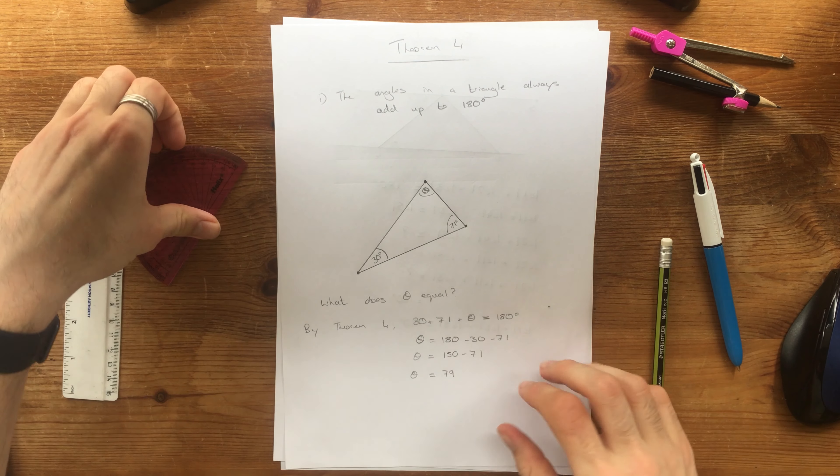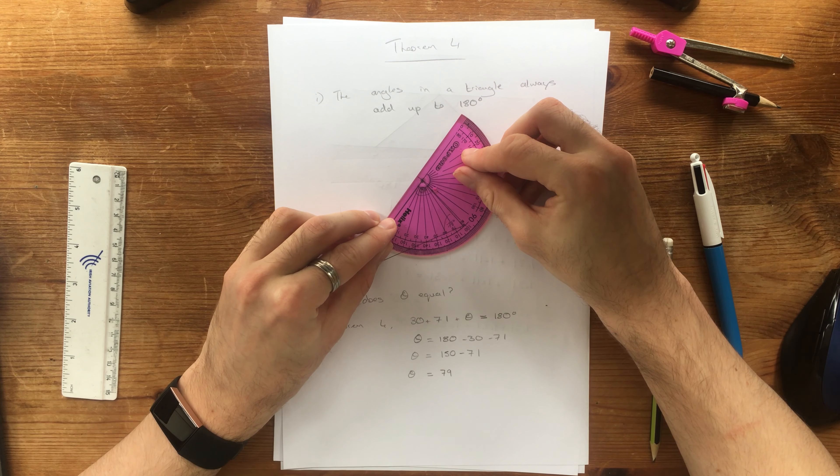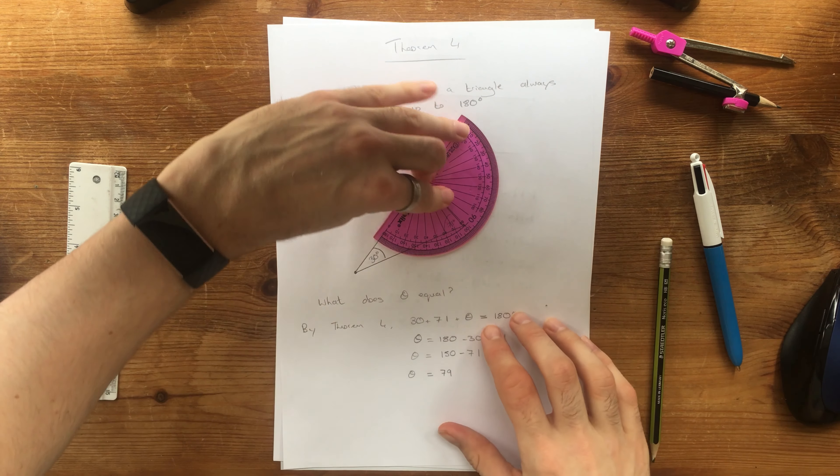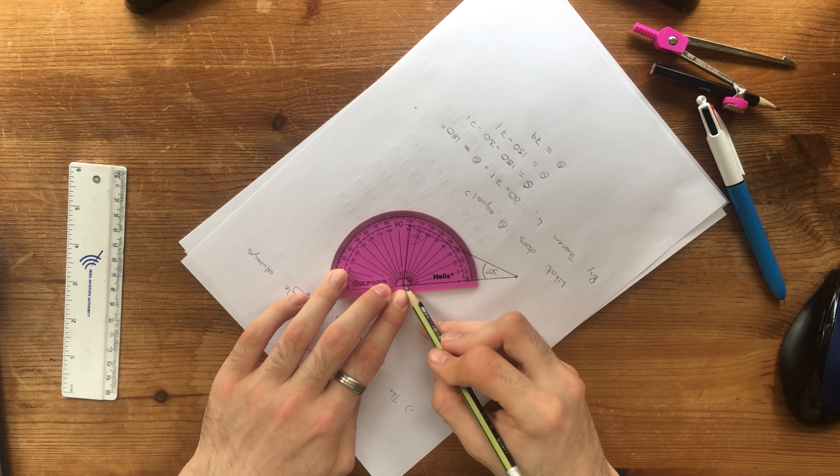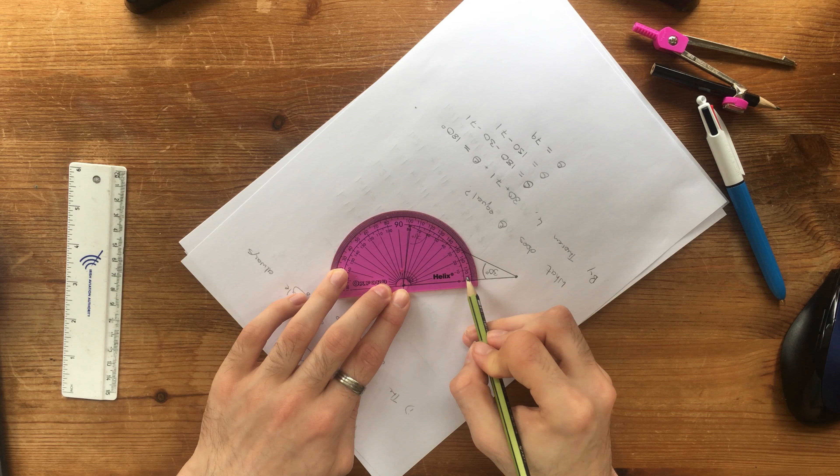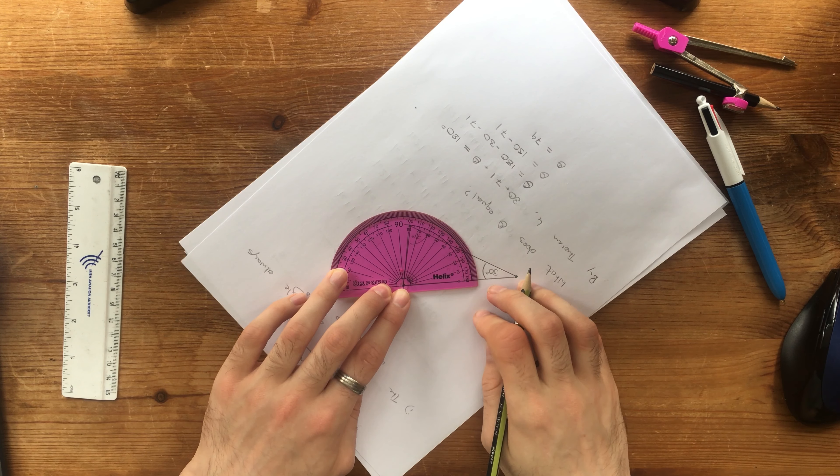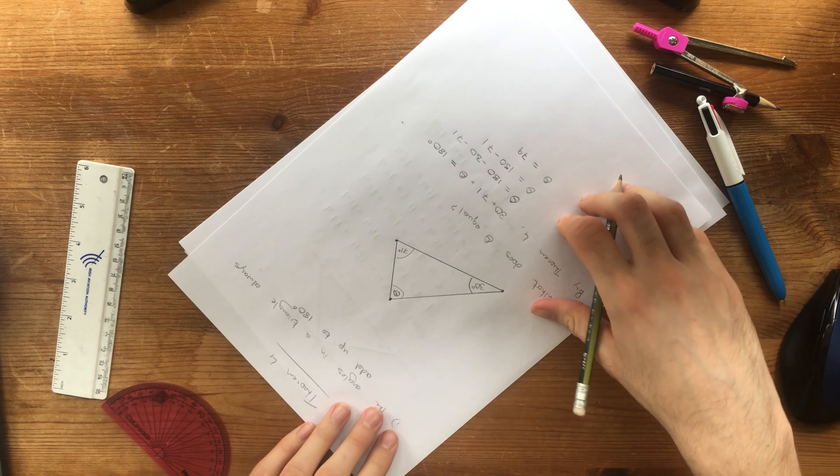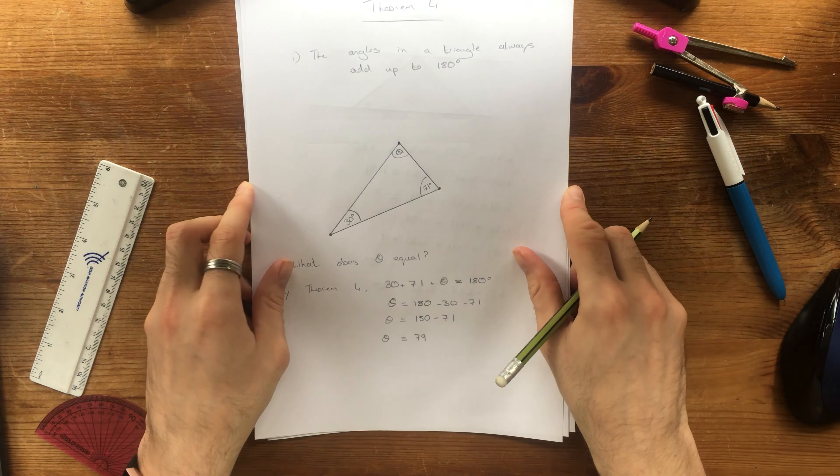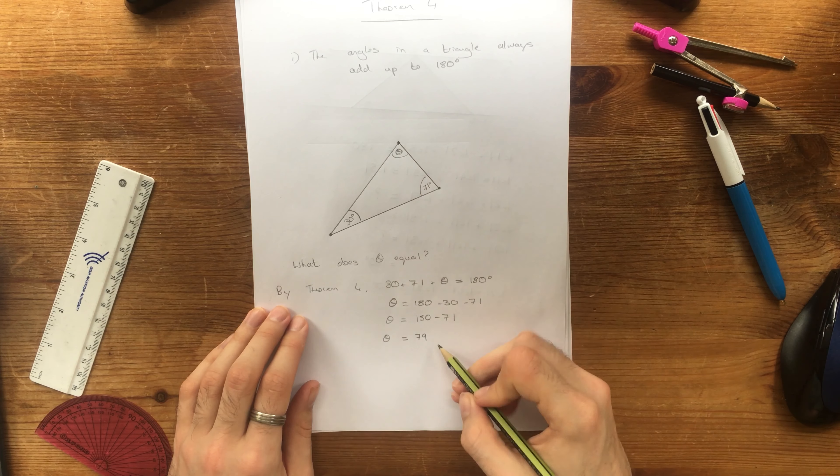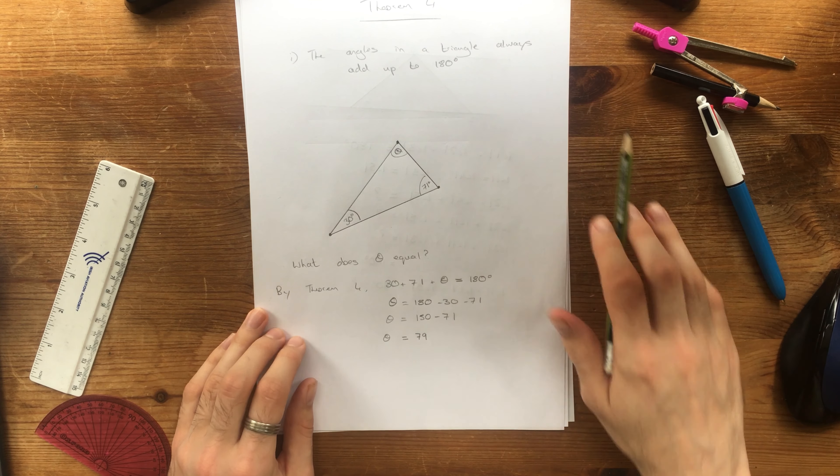Now let's just measure this to be 100% sure. And I'm going to turn this upside down so you guys can see it. And we've got, if you follow this around, it actually lines up to exactly 79. So without using our protractor, we've managed to work out that this angle is equal to 79 by using theorem 4, which says all angles in a triangle always add up to 180 degrees.